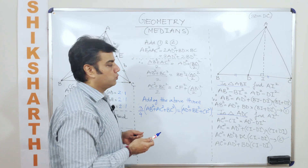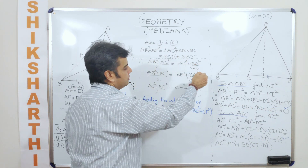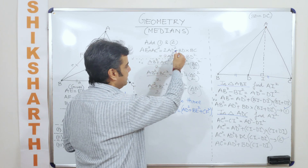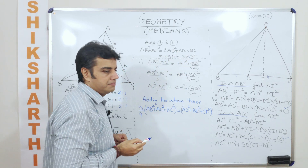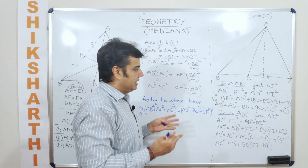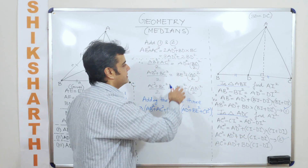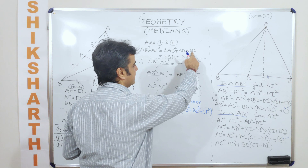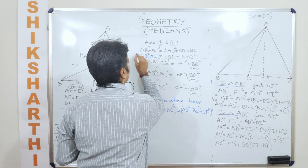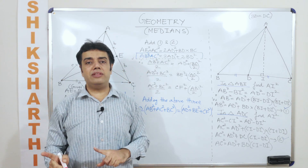Now add equation 1 and equation 2. When you add these two equations, you get: AB² + AC² = 2·AD² + BD·BC. We know that BC is twice BD, so BD is half of BC. Substituting: AB² + AC² = 2·AD² + (BC/2)·BC. This gives us the length of the median in terms of the side lengths.